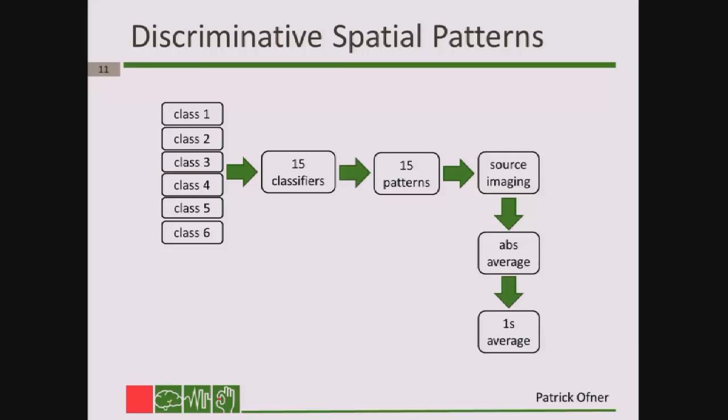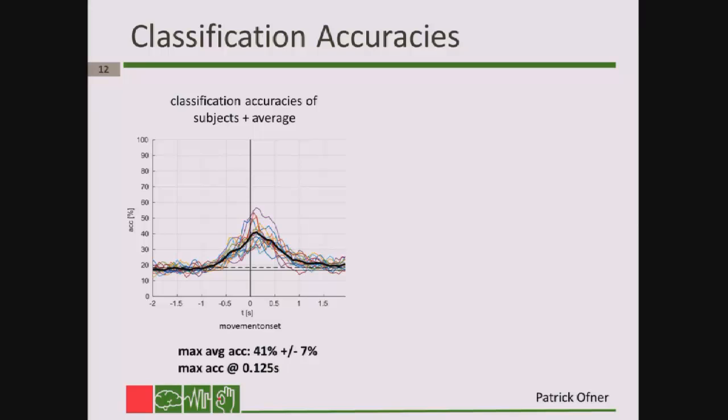We then transformed these 15 patterns from channel space to source space using Brainstorm, a template brain model, and sLORETA. We took the absolute average of all 15 patterns and averaged over one second, yielding one pattern per subject.